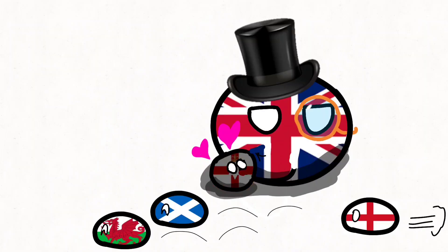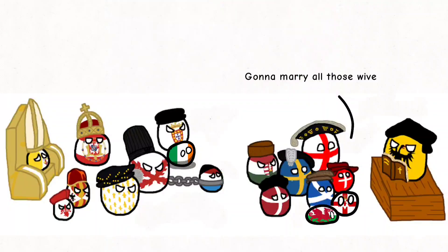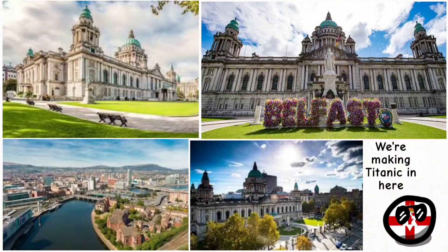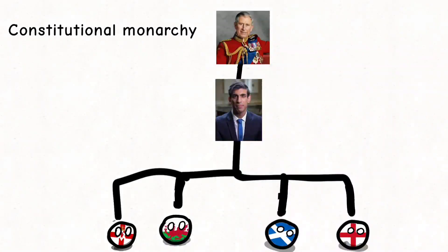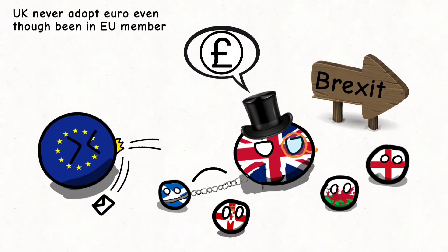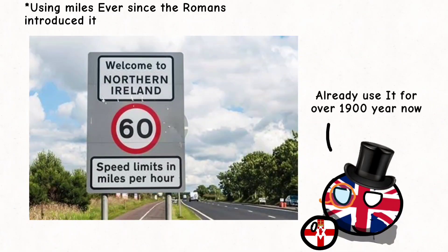Meanwhile, Northern Ireland is a part of the United Kingdom, located in the northeastern part of the island, mainly Protestant, with the capital city Belfast. Northern Ireland is a constitutional monarchy with a monarch as the head of state and a first minister as the head of government, using the British pound as currency, identifying as British, and using miles for distance.